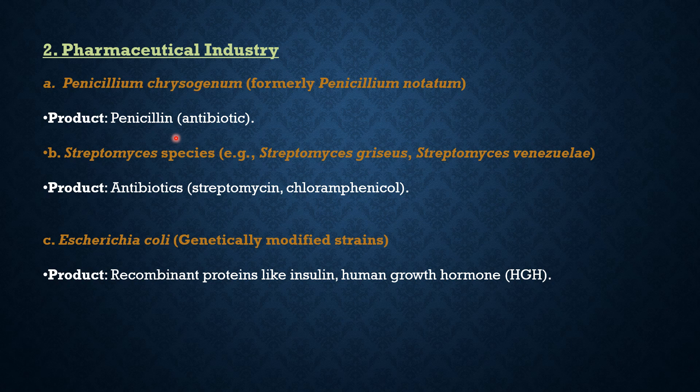Another important actinomycete in antibiotic production is Streptomyces species, such as Streptomyces griseus or Streptomyces venezuelae. These are used for antibiotic production including streptomycin and chloramphenicol. The advantage is they produce diverse antibiotics effective against both gram-positive and gram-negative bacteria and can be used for novel drug development through genetic modification. The disadvantage is that resistance in target organisms can develop and toxic side effects such as nephrotoxicity with streptomycin have been observed.